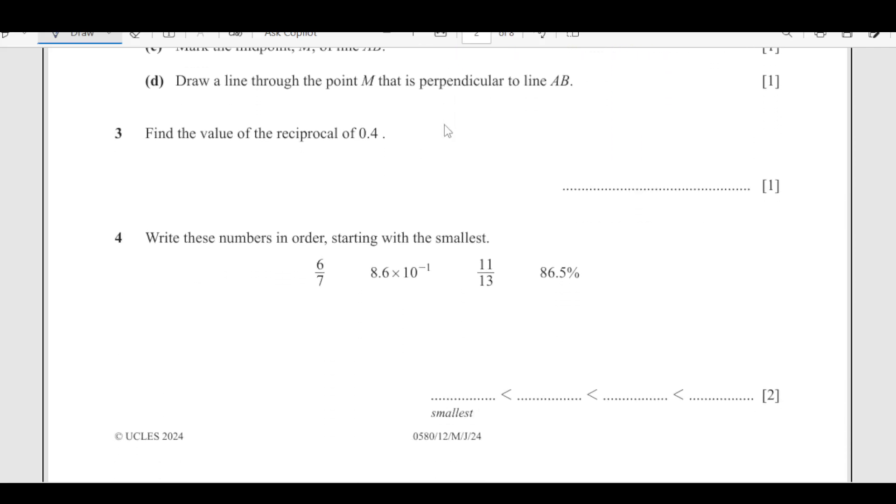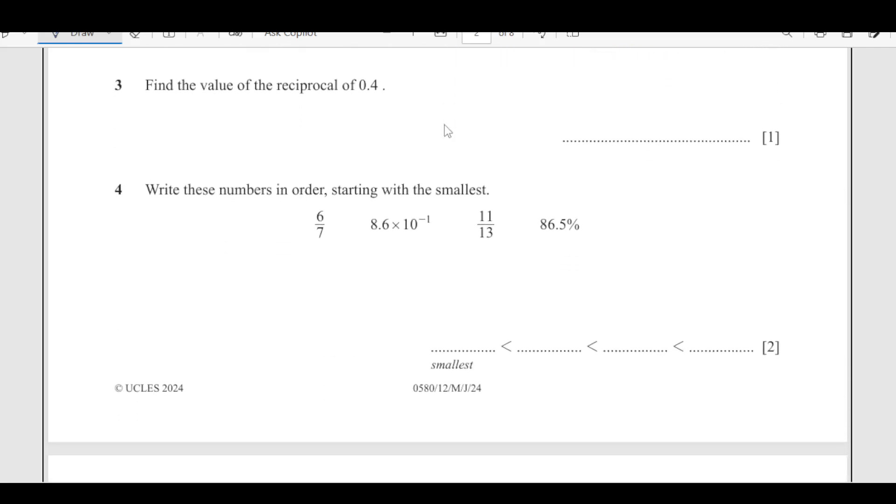Number 3, find the value of the reciprocal of 0.4. First of all we can write 0.4 as 4 over 10, then the reciprocal is going to be 10 over 4. Simplify, divide by 2, it will be 5 over 2, which is 2.5. Our question is in decimal, so our answer is also supposed to be in decimal, so 2.5 is the answer.